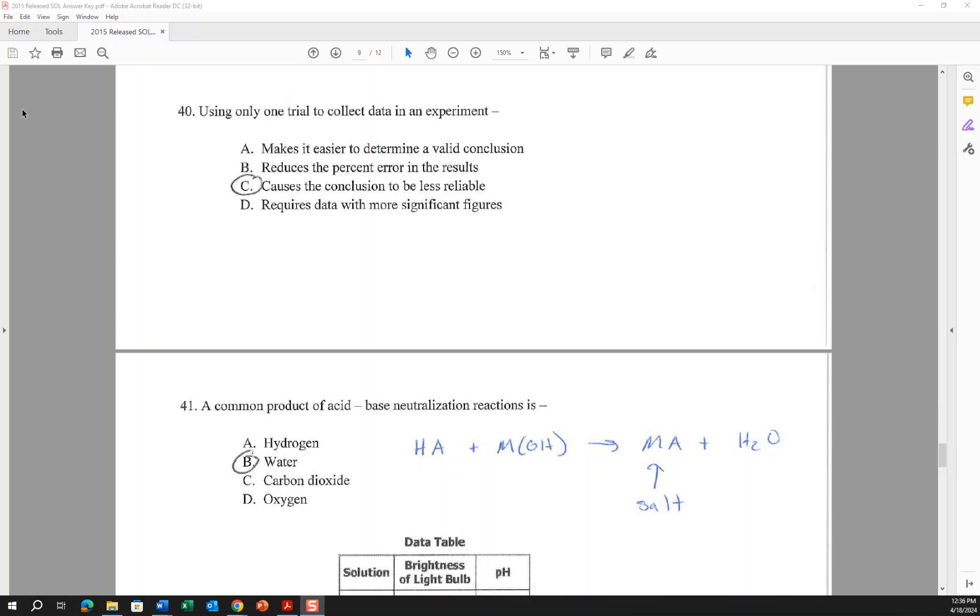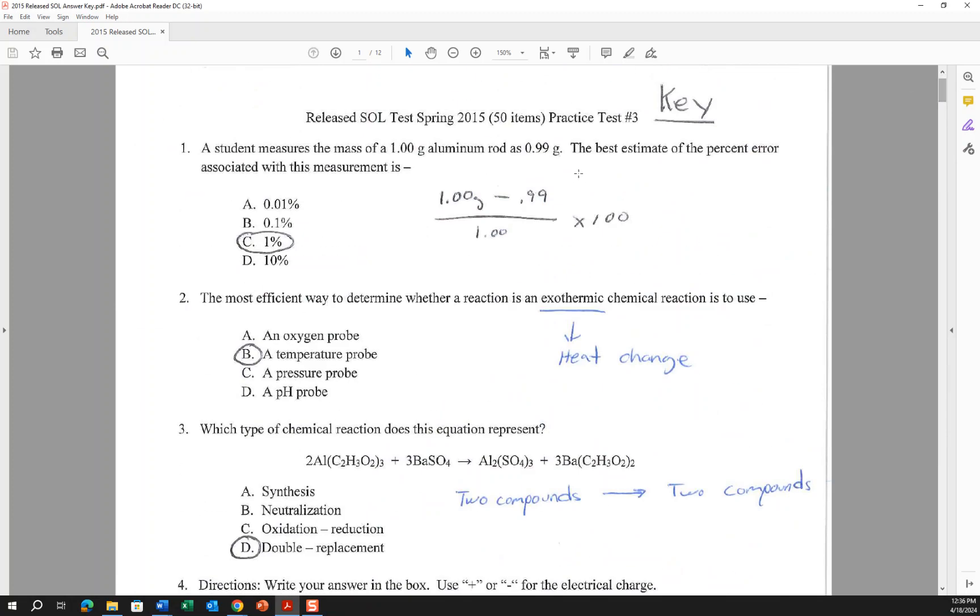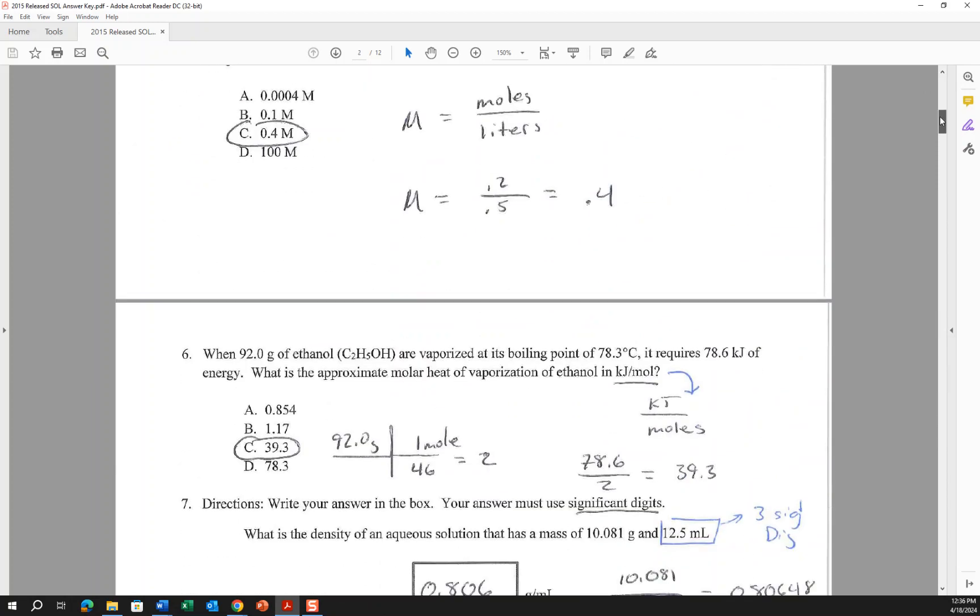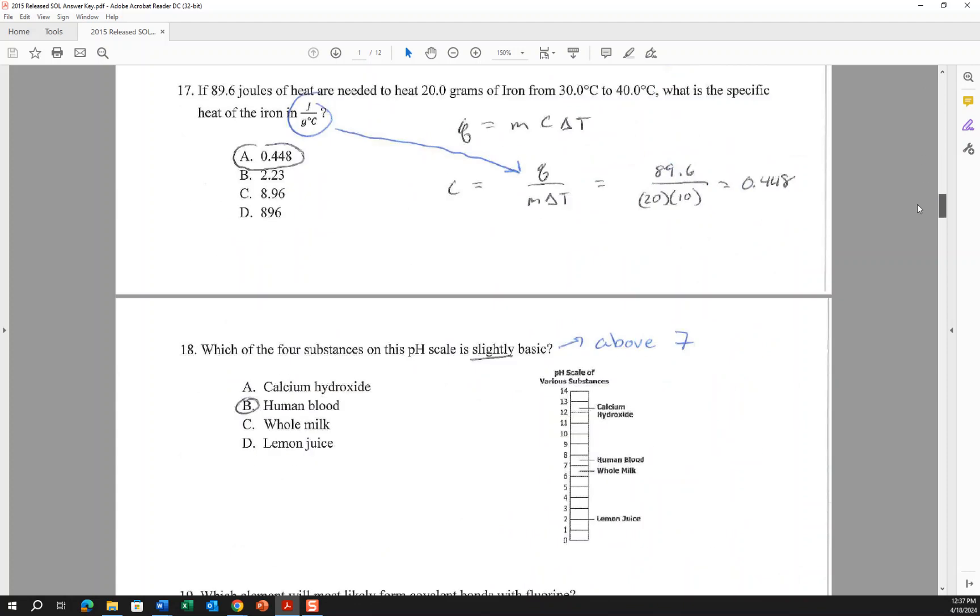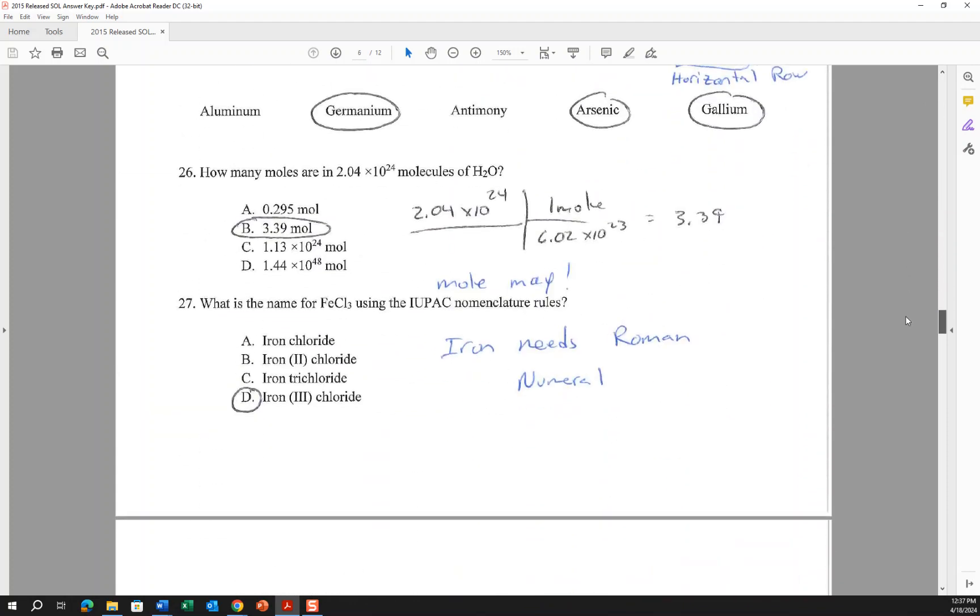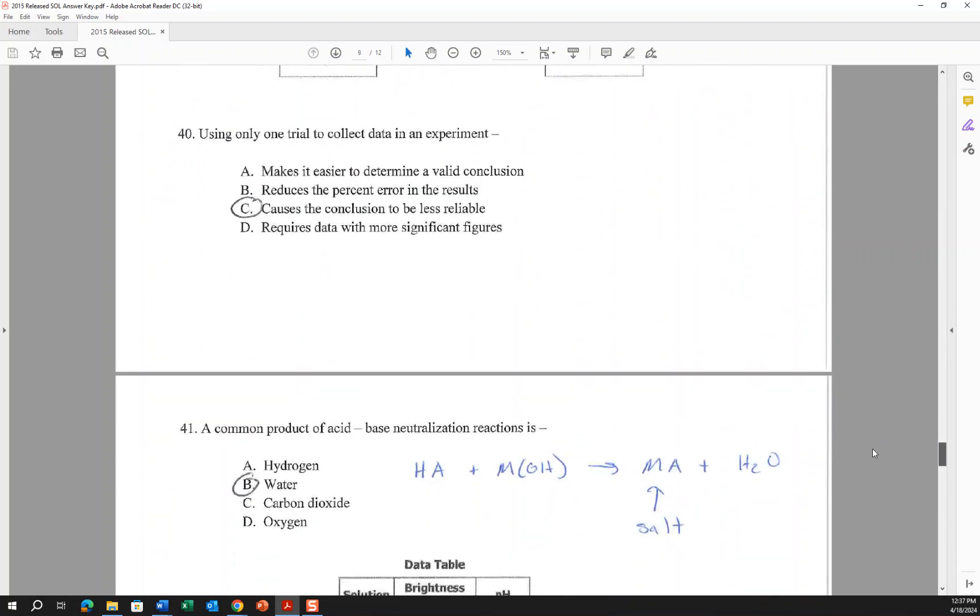Alright guys, so we are resuming the 2015 Released Chemistry SOL and we're just going to finish it up with questions 40 through 50. This test was the 2015 Chemistry SOL, so these are questions that the State of Virginia used back in 2015. You can use this as a guide to what to expect, and we finished off on question 40.